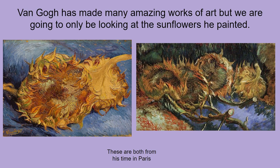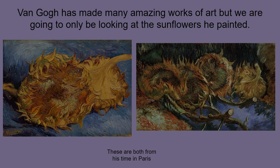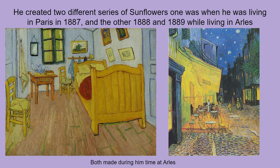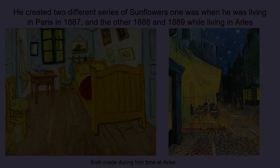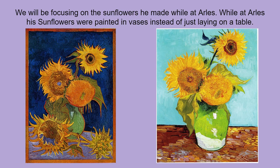These sunflowers were made at two different times. There were the sunflowers in Paris, which were not in a vase, made in about 1887, and the other ones were made when he was living in Arles, which is also in France. That's a time when he made lots of really awesome artwork, like the Bedroom at Arles or the night scene. I believe there are 12 different sets of sunflowers he made — five of them in Paris, and some others in Arles. One big difference is the Arles ones were painted in vases instead of just laying on the table.